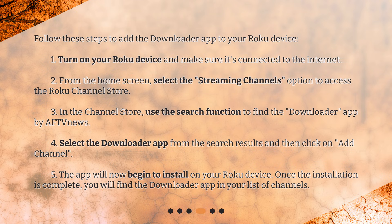Step 3: In the channel store, use the search function to find the Downloader app by AFTV News. Step 4: Select the Downloader app from the search results and then click on Add Channel. Step 5: The app will now begin to install on your Roku device. Once the installation is complete, you will find the Downloader app in your list of channels.